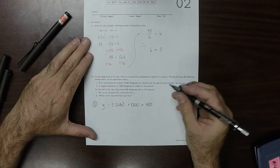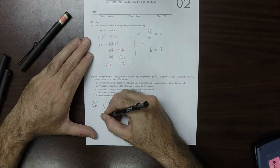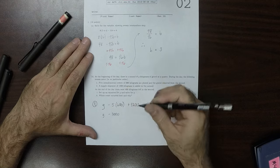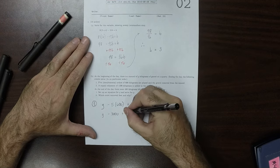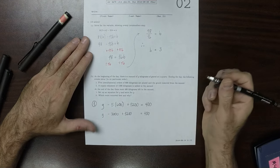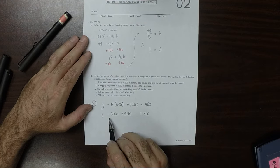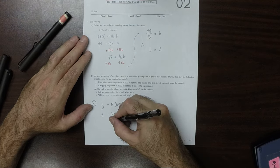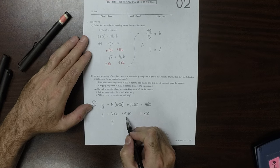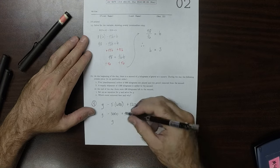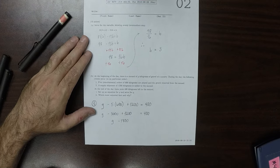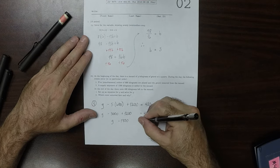To carry this out, that would be G minus 3,000 plus 1,200 equals 400. And then G, so minus 3,000 plus 1,200, that would be minus 1,800 equal to 400.